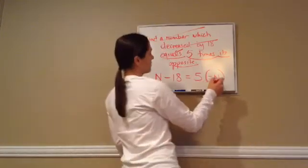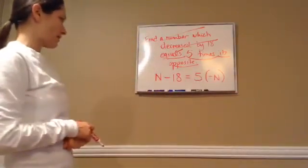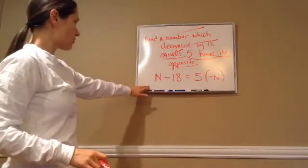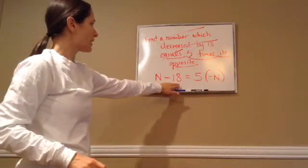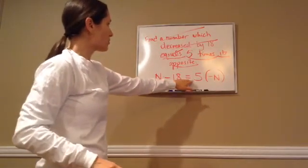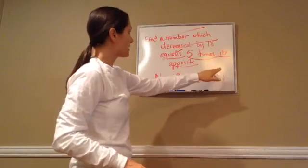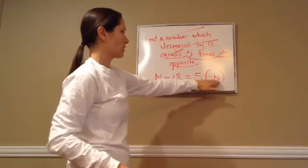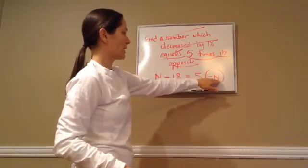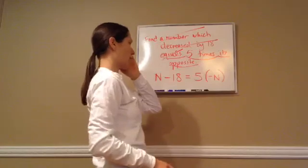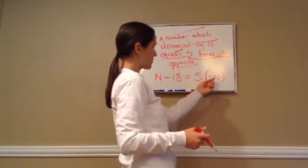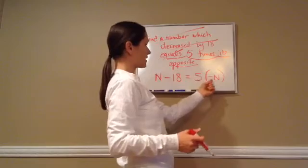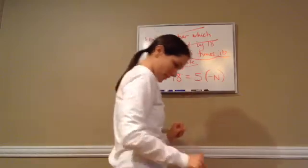Make sure you're learning and doing that. Find a number which decreased by 18 equals 5 times its opposite. What's opposite? The number's opposite — n is the opposite of. So the opposite of the number is negative n.